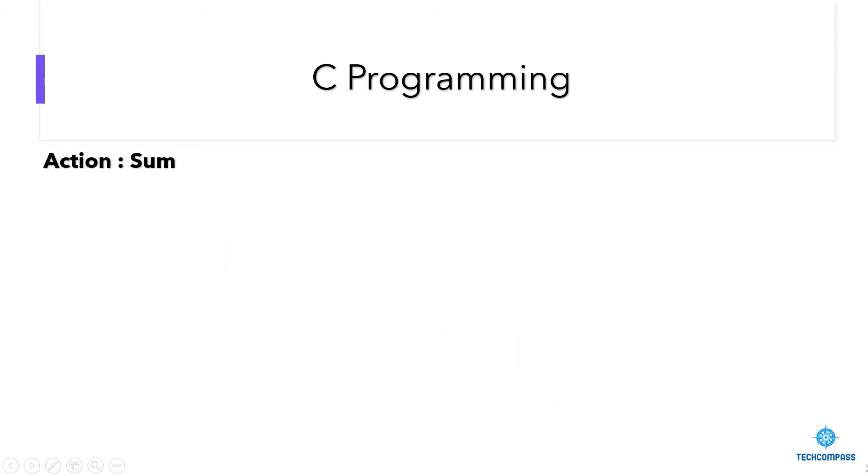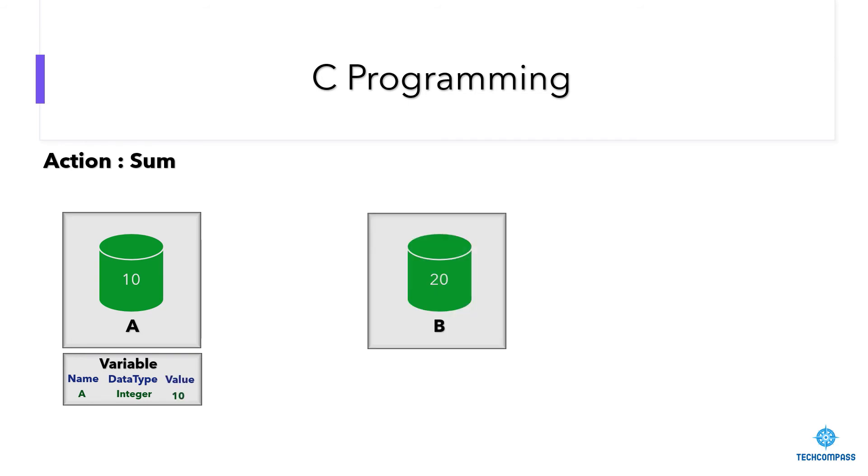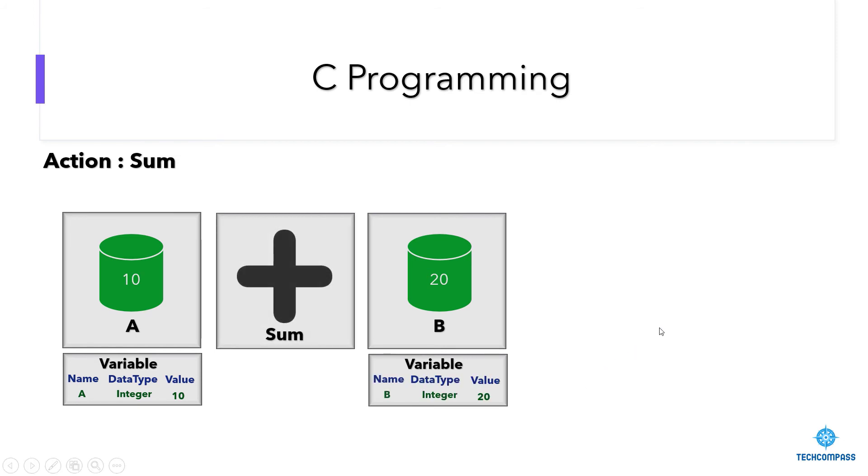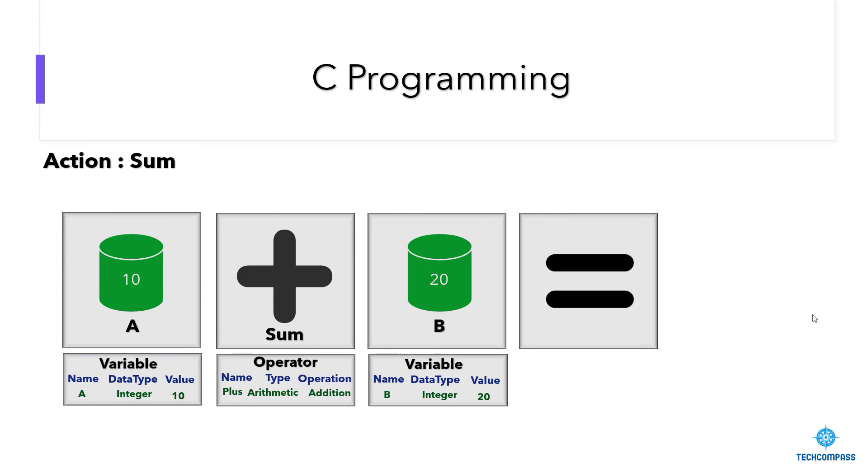Now, even more elaborately, look at the sum action. This is one variable. The name of the variable is A, its data type is integer, value is 10. Similarly, we have a variable named B. Data type is integer, value is 20. In this action, we need to sum A and B. To sum, we are using the plus operator. The type of the operator is arithmetic. Since it is used for doing arithmetic operations, it is classified as arithmetic operator. Operation is addition.